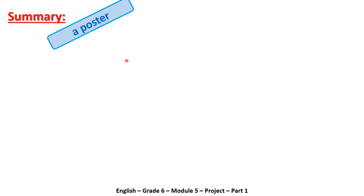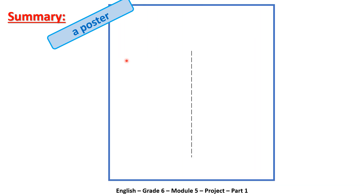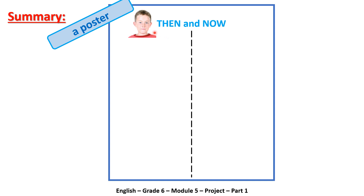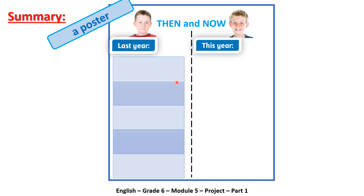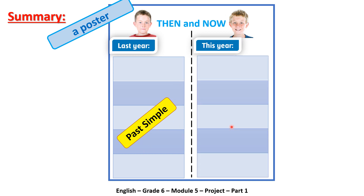To sum up, in order to write a poster you need to: bring a blank sheet of paper, split it into halves, put the title (for example 'Then and Now'), stick an old photo and write 'last year' below it on the left side, stick a recent photo and write 'this year' on the right side. Then make a list of things you did or used to do last year using the past simple, and on the right list things you do nowadays using the present simple.